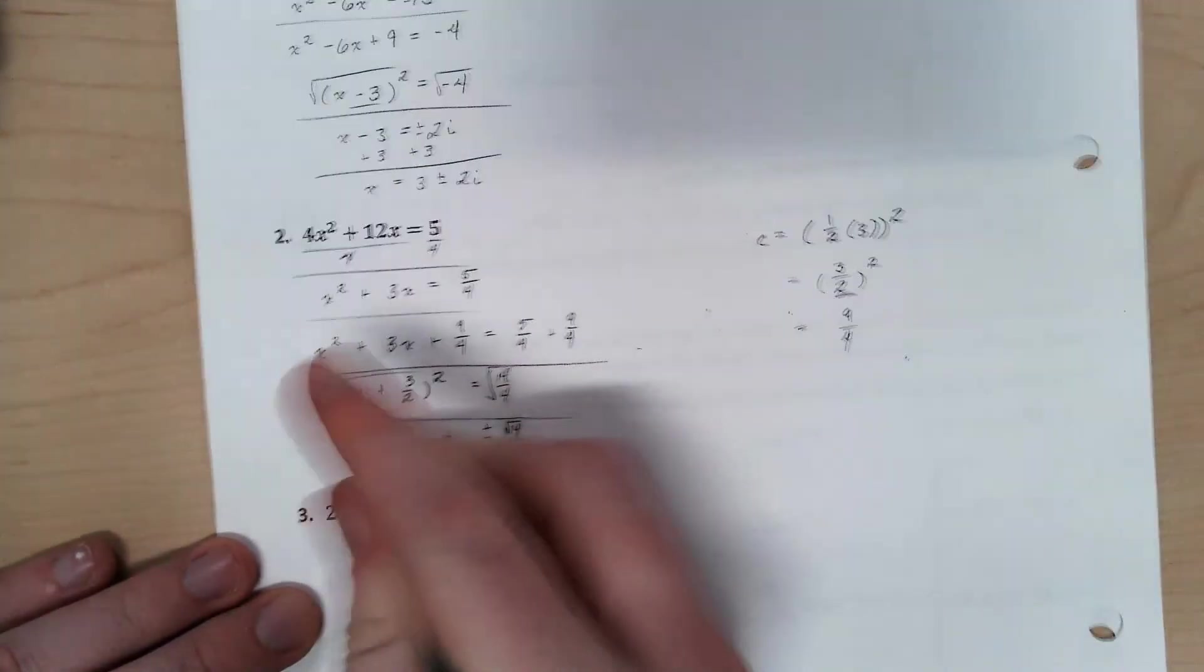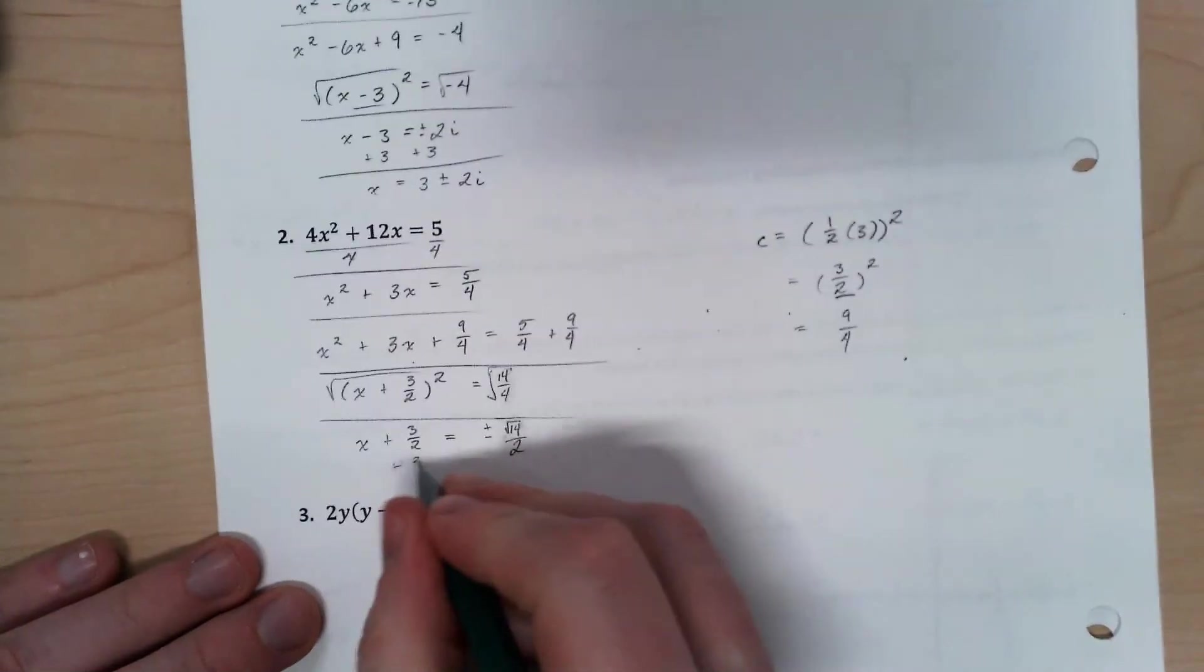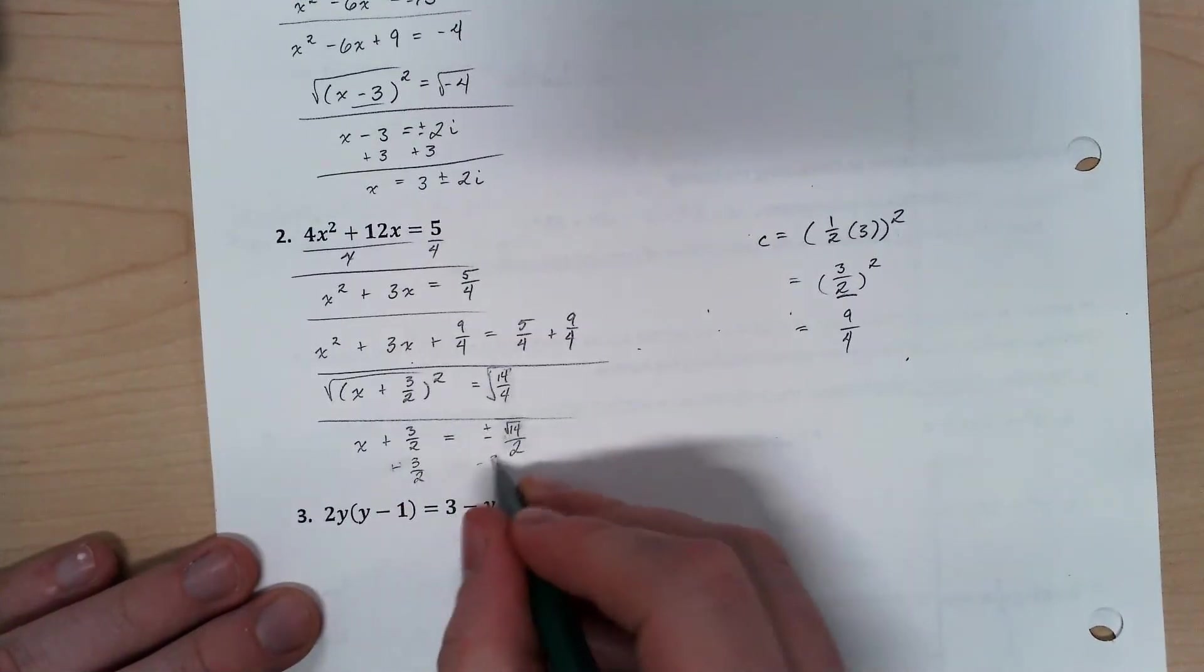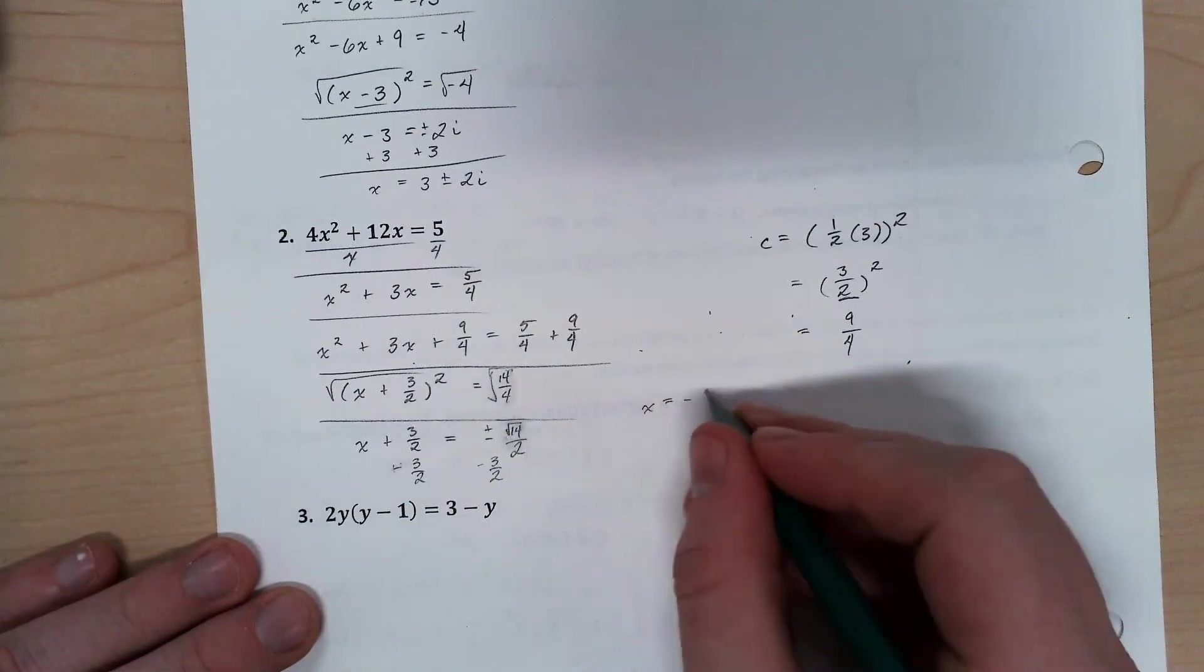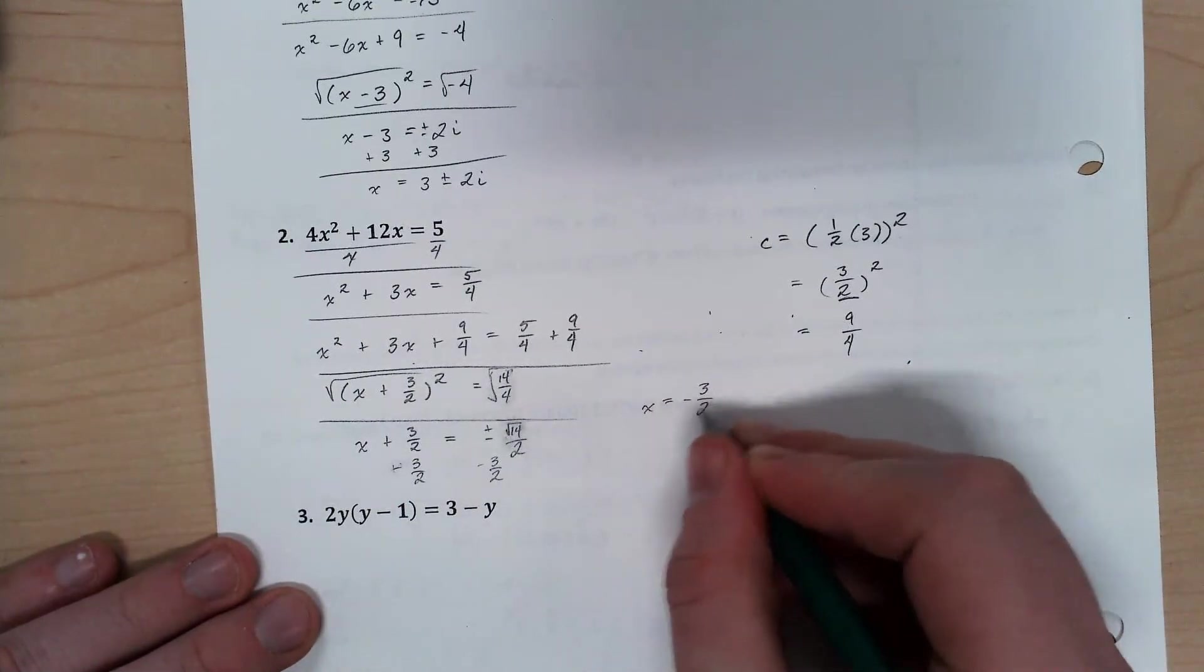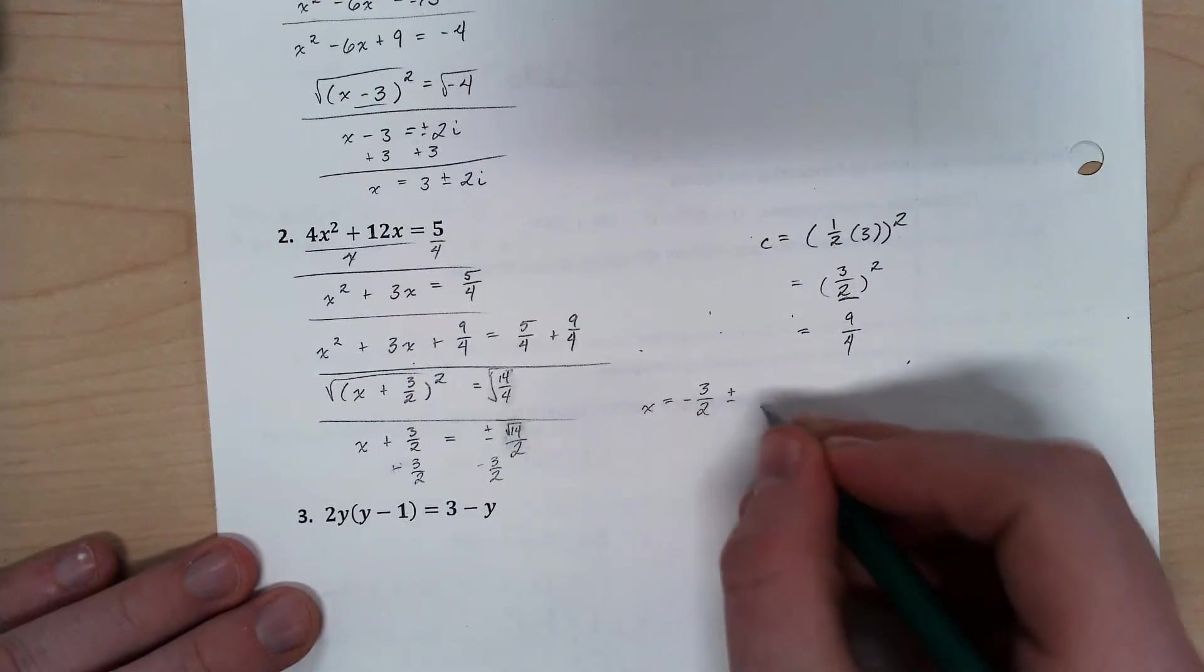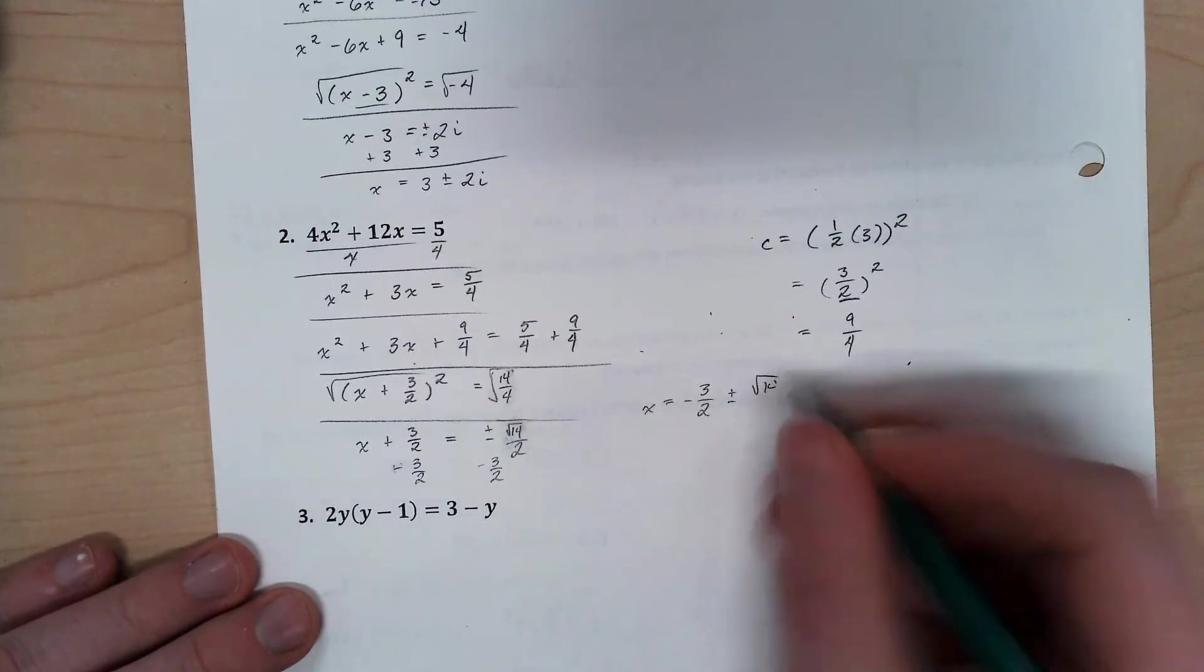Now I'm going to subtract my 3 over 2 over. And again, we don't have like terms. So my final solution here is x is negative 3 over 2 plus or minus root 14 over 2.